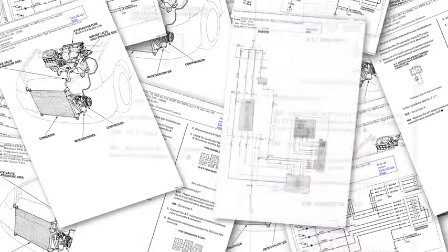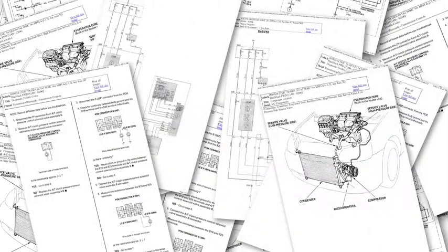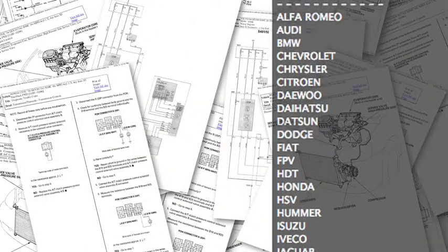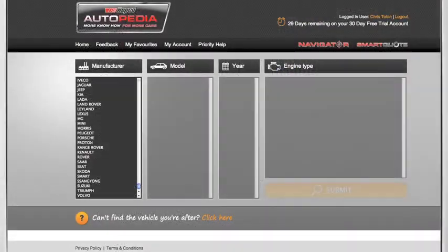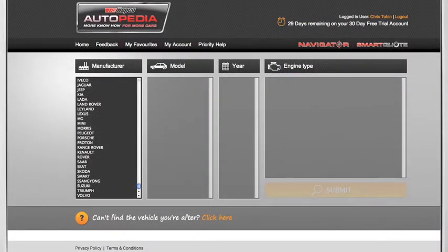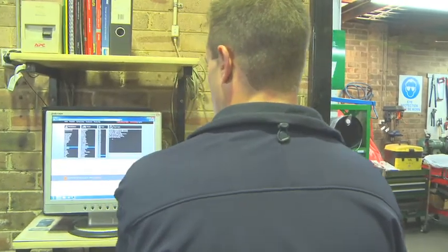Autopedia has over a million pages of technical information covering 52 vehicle manufacturers, all accessible via the easy-to-use website. Now let's see Autopedia in action.